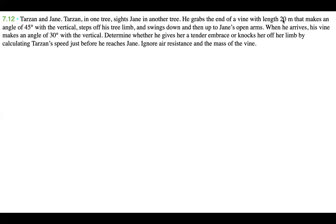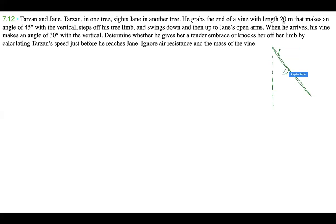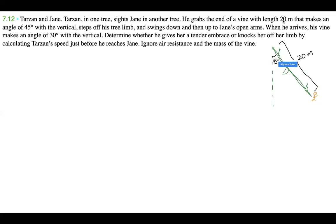Let's draw this problem out. We have a vine, and Tarzan grabs it at an angle of 45 degrees from the vertical. Here's Tarzan — I'll draw him as a little orange figure. He grabs the vine, and the length of the vine is 20 meters, at 45 degrees.